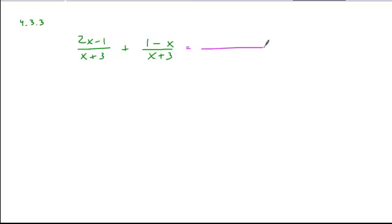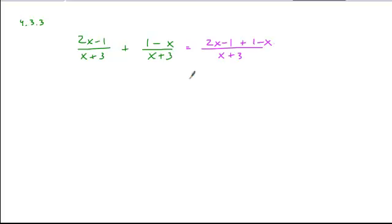These two fractions can be combined without any manipulation simply because they have the same denominator already. So if we just combine the binomial 2x minus 1 plus the binomial 1 minus x, we can combine all our like terms here.